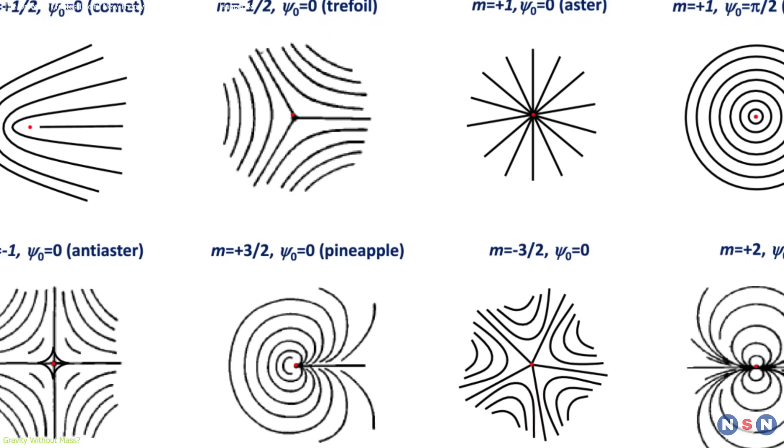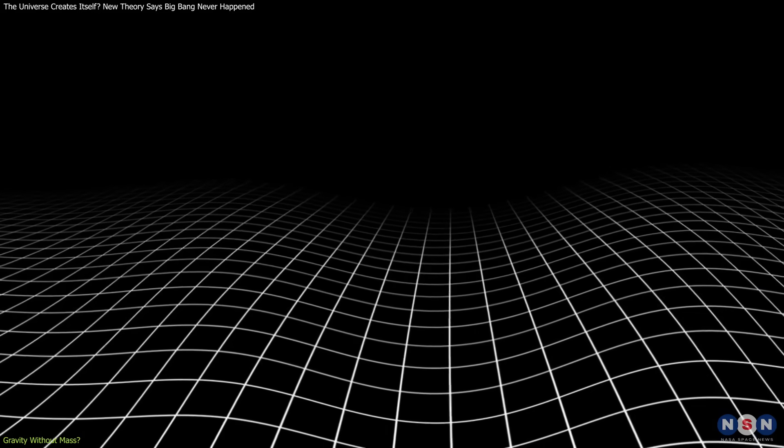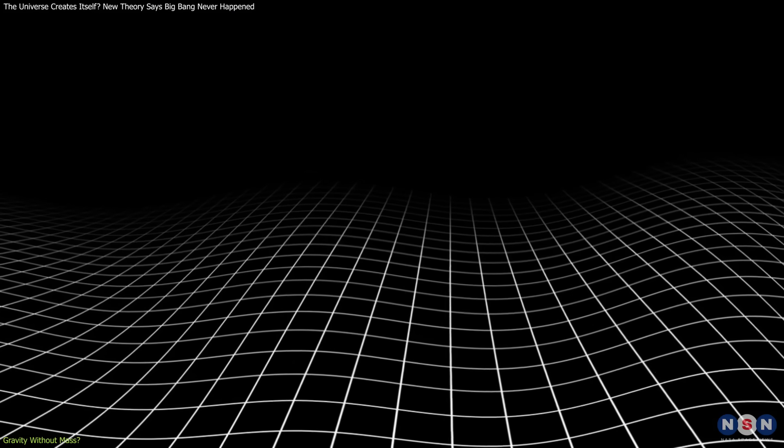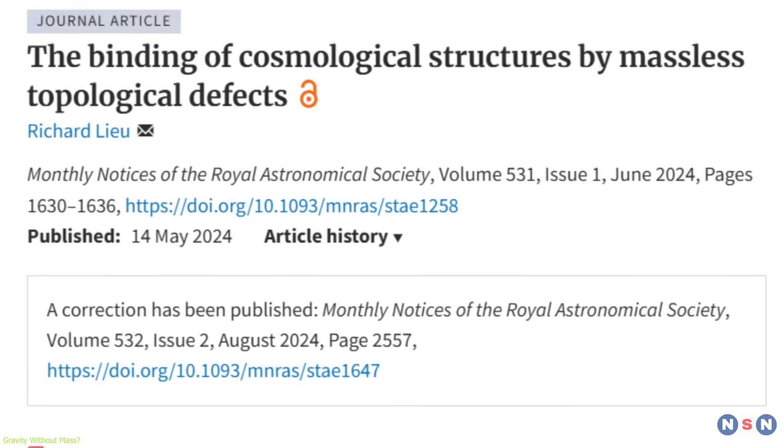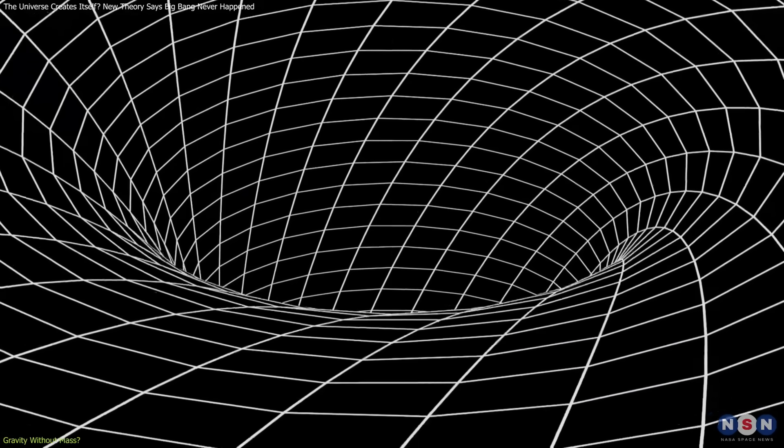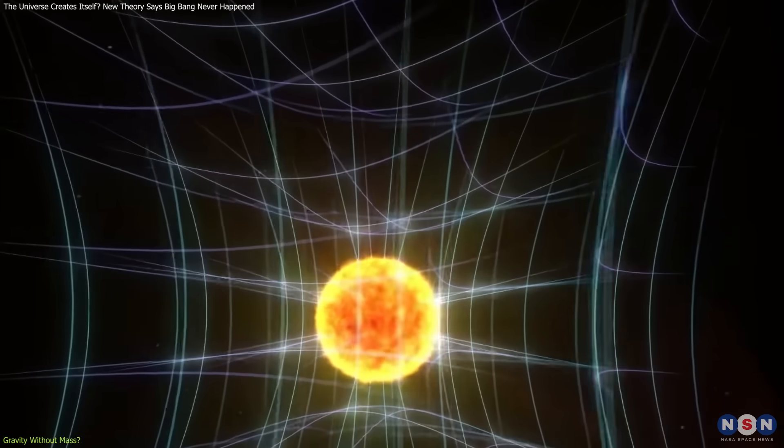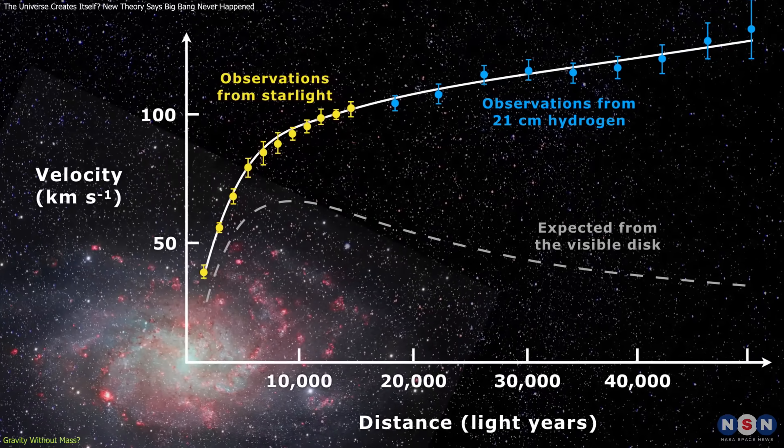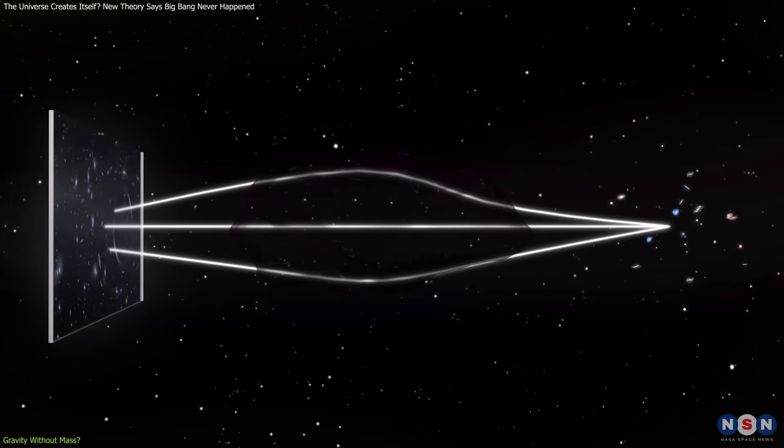Liu diverges sharply from this view. He suggests that gravitational effects could emerge from massless topological defects—irregularities in the structure of spacetime that don't contain physical mass. In a 2024 paper published in the Monthly Notices of the Royal Astronomical Society, he argues that these defects can generate gravitational fields indistinguishable from those produced by massive objects, especially on cosmological scales.